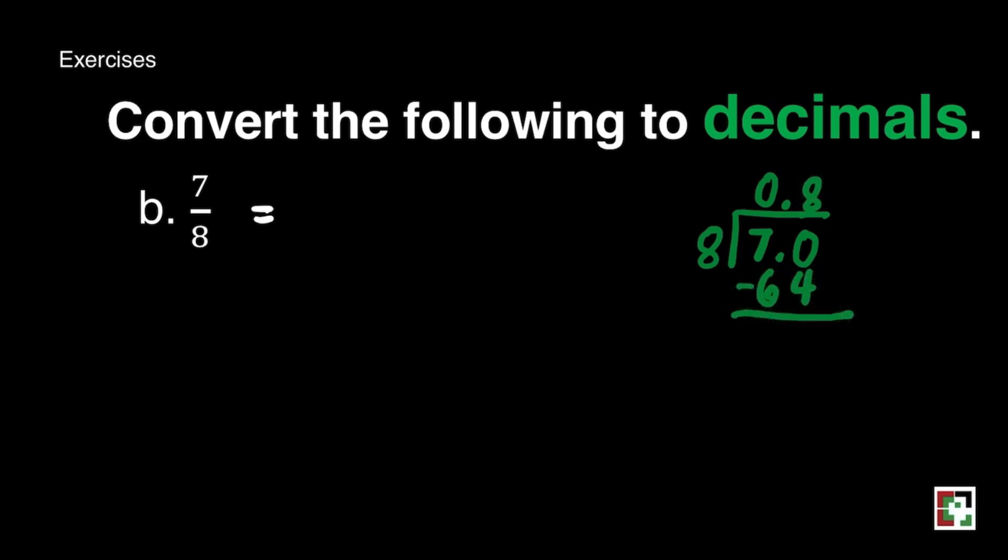8 times 8 is equal to 64. Then subtract. We get 6. Bring down 0 because we add 1. There are 7 eighths in 60. We get 56. Then subtract.